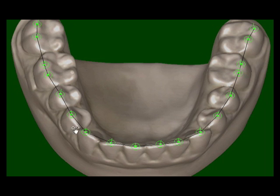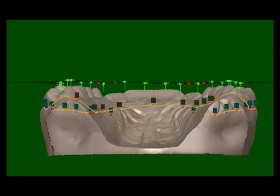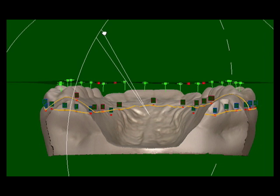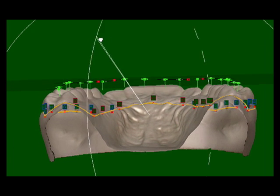For centric relation splints, the extent of the anterior and cuspid ramps is defined by placing markers on the contact line. Here we see a complete set of contacts on a lower model.